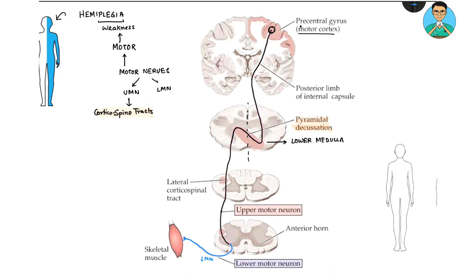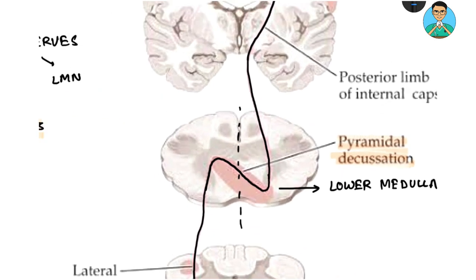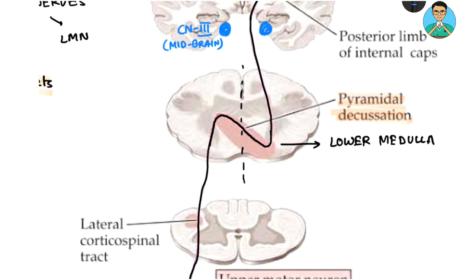What determines crossed or uncrossed hemiplegia? It is dependent on the cranial nerve involvement associated with the hemiplegia. Let us take two cranial nerves as examples: cranial nerve 3 (CN3), whose nucleus is at the level of the midbrain, and cranial nerve 12, which is present at the level of the lower medulla, just below the pyramidal decussation.